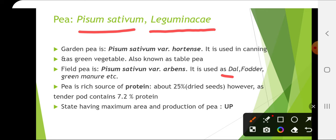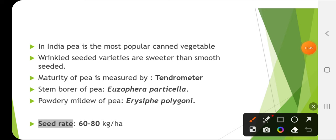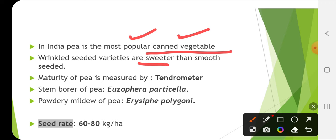Field pea (Arvense) is used for dal, fodder and green manure. Pea is a rich source of protein — about 25% protein is present in dry seeds and tender pods contain 7.2% protein. The state with maximum area and production is UP. Pea is the most important canned vegetable in India, with frozen peas very popular. Wrinkled-seeded varieties are sweeter than smooth-seeded. Maturity of pea is measured by tendrometer.